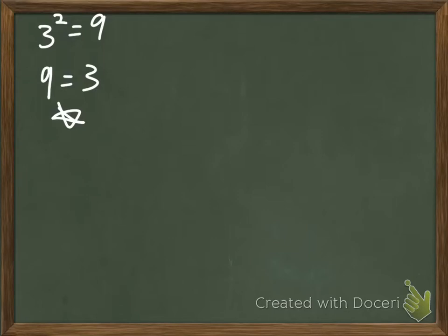The operation that lets us do that is called a Square Root. A square root is the opposite of squaring something — just like addition is the opposite of subtraction, and multiplication is the opposite of division. They're opposite operations of each other.